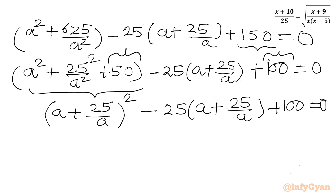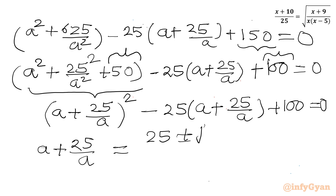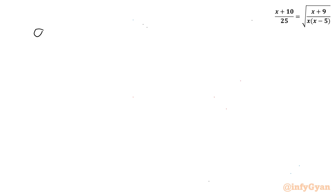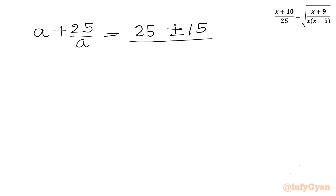Applying the quadratic formula directly: (a + 25/a) = [25 ± √(625 minus 400)] / 2 = [25 ± √225] / 2 = [25 ± 15] / 2. So the RHS gives us 40/2 = 20 and 10/2 = 5. We have two values of (a + 25/a).